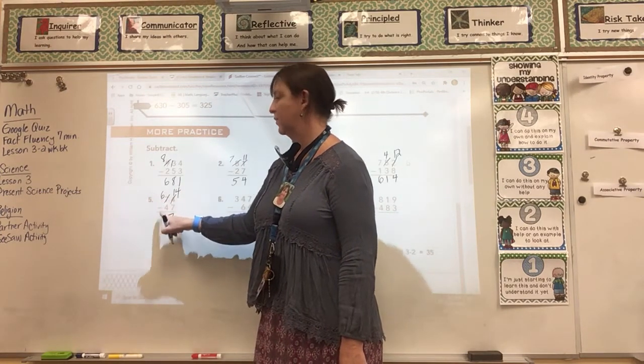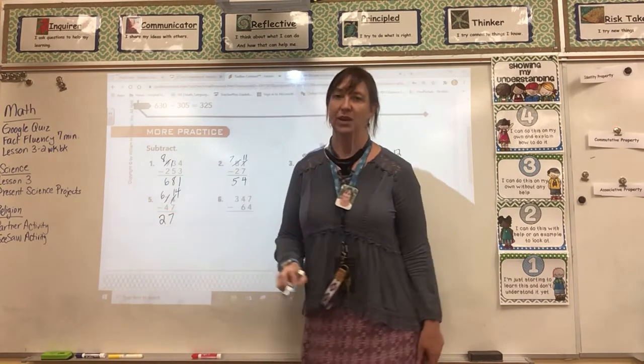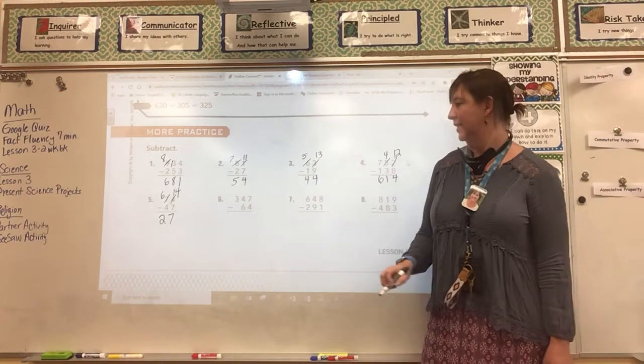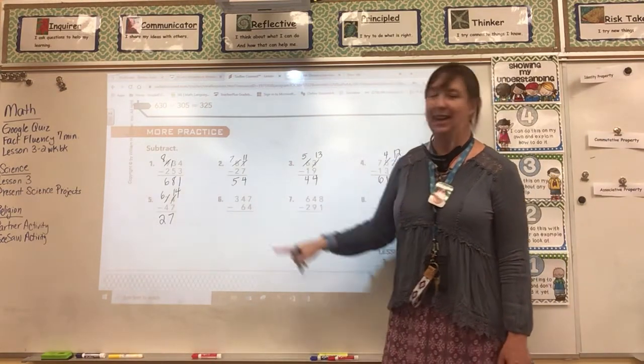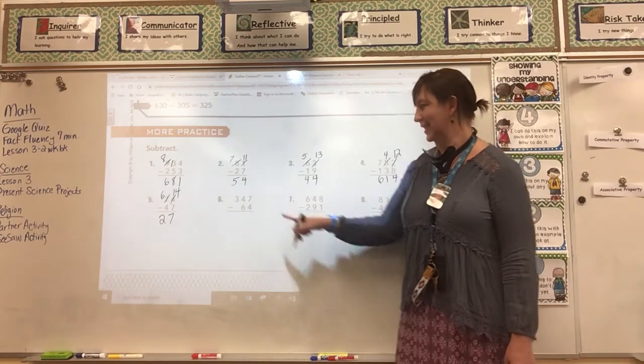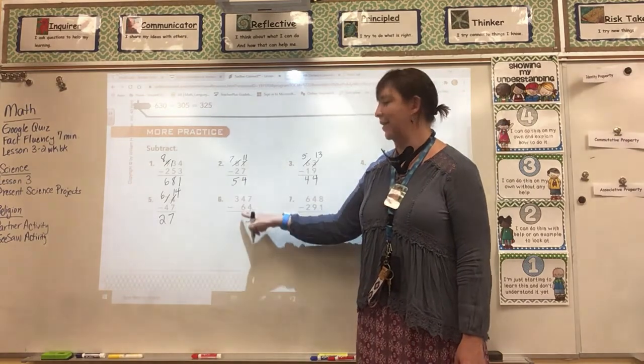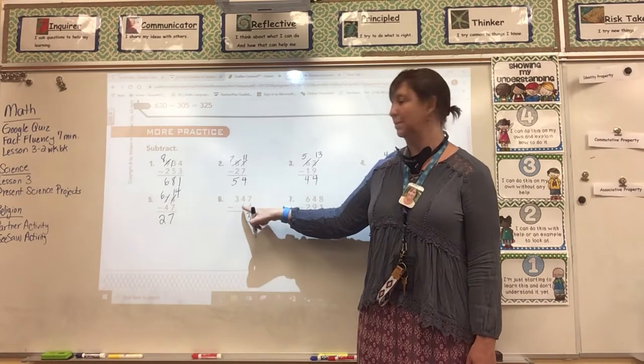6 minus 4 is 2. And my answer is 27. Number 6 is a little bit easier because I don't have to start with regrouping. 7 minus 4 is 3.